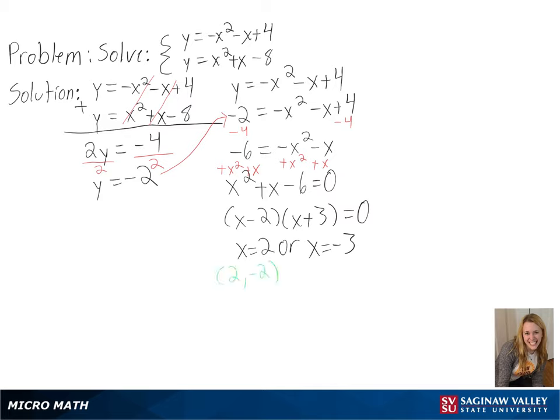So our intersections are at 2, negative 2, and negative 3, negative 2.